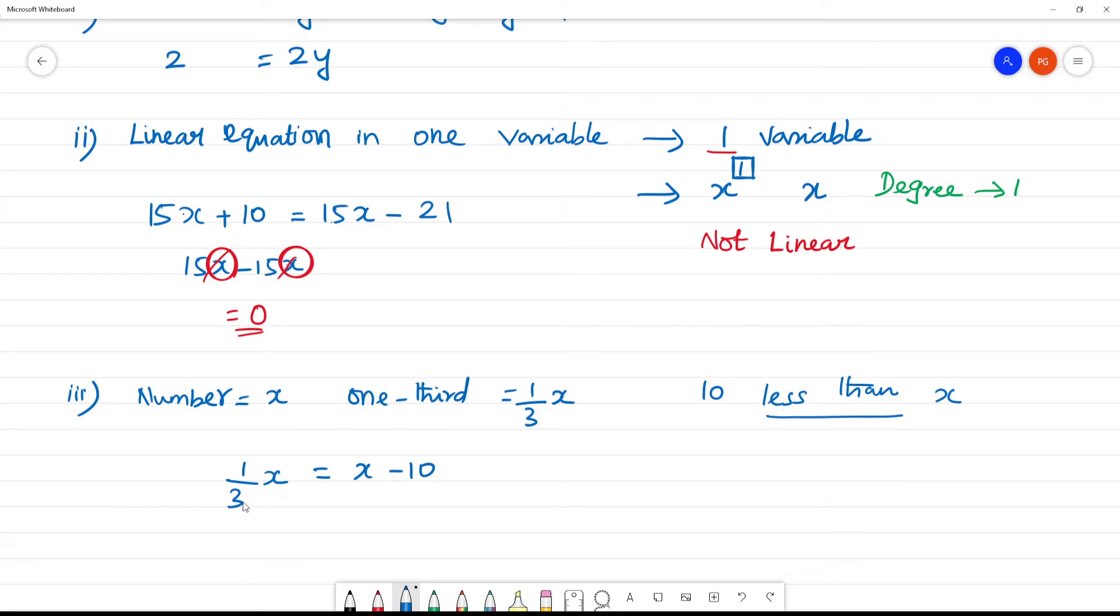3 multiplied: x is equal to 3 into x minus 10. So x is equal to 3x minus 30. x minus 3x is minus 2x is equal to minus 30. x is equal to 15.